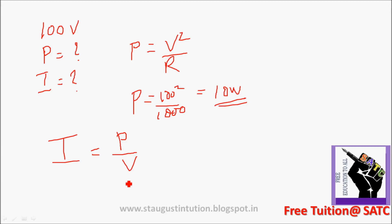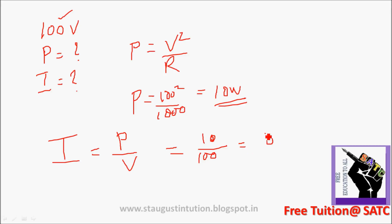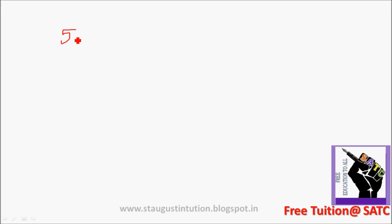Power is equal to IV. Now I is equal to P by V. P is equal to power 3. Voltage is equal to 100. So the answer is 0.1 Ampere.